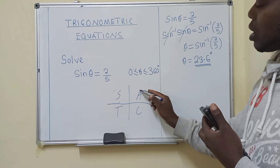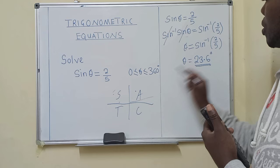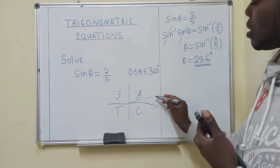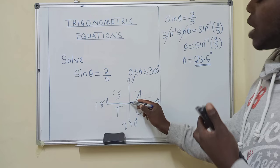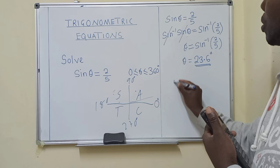So meaning our solutions will be here and in this quadrant. For this quadrant, we have found 23.6 because it's falling in the first quadrant. This is 0 degrees, 90 degrees, 180 degrees, 270 degrees. So meaning 23.6 is falling in the first quadrant. So now we find the other angle, which is in the second quadrant. So we know that there is 180 here. So we say 180 minus 23.6 degrees.